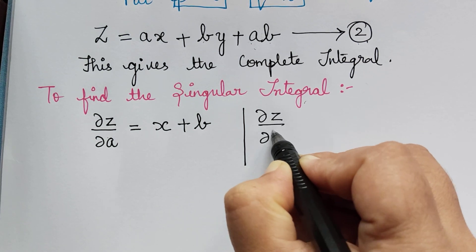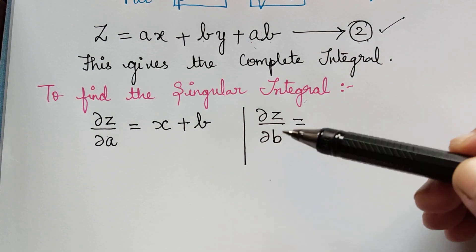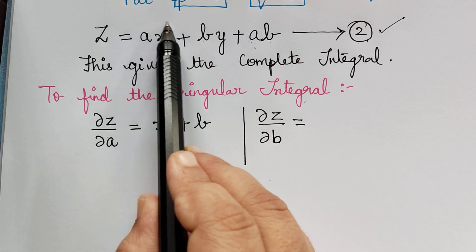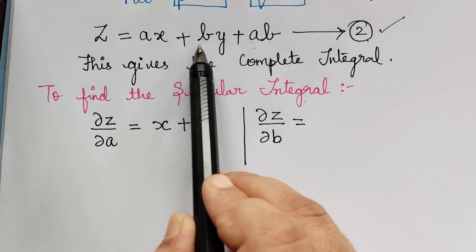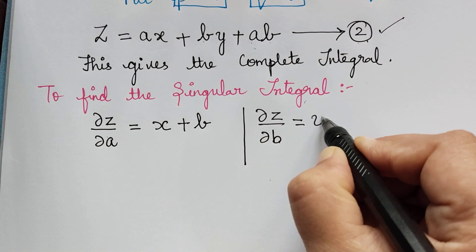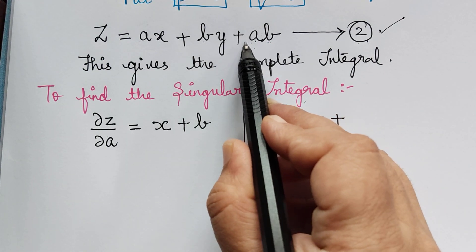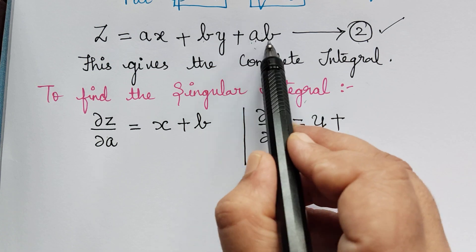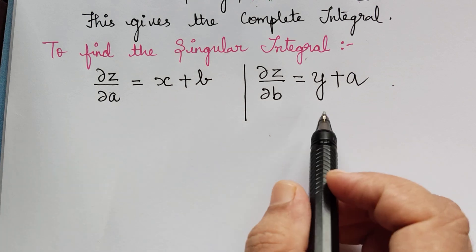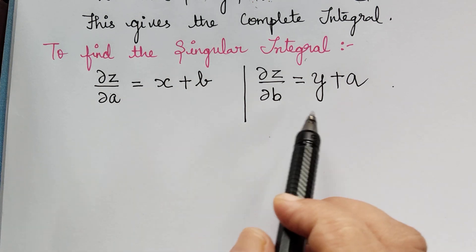∂z/∂b is found by differentiating equation 2 partially with respect to b. The term ax is constant so it becomes 0. Differentiating b gives 1, so 1 multiplied by y gives y. For ab, a is treated as constant and differentiating b gives 1, so a × 1 = a. Therefore ∂z/∂b = y + a. To eliminate a and b, we put both ∂z/∂a and ∂z/∂b equal to 0.